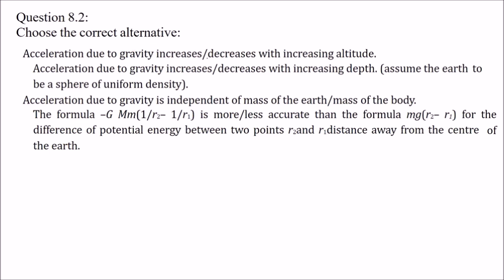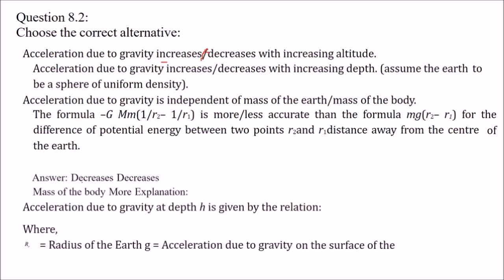Ismein choose karna hai — aap yahan slash dekh rahe hain, iska matlab inn mein se aapko ek choose karna hai. Acceleration due to gravity increases/decreases with increasing altitude — jaisi aap upar ki taraf jayenge, acceleration due to gravity kam hoti hai, toh iska uttar hai 'decreases'. Acceleration due to gravity increases/decreases with increasing depth — jaisi aap depth andar ki taraf jayenge, yeh decrease hogi, kyunki hum jaante hain center pe jaakar yeh zero ho jaati hai. Yahaan par bhi aap 'decreases' choose karenge.